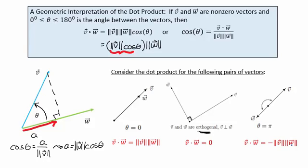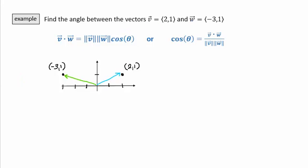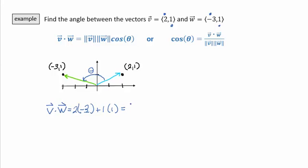Let's find the angle between two vectors v and w. If vector v has components 2, 1 it would point off in this direction, and if vector w had components negative 3, 1 it'd point off in this direction. We're trying to find the angle theta — the amount of rotation between those two vectors. We know that the cosine of theta is given by the dot product divided by the magnitudes of v and w. First let's find the dot product of v and w: that's the multiplication of the x components plus the multiplication of the y components, which gives us negative 5.